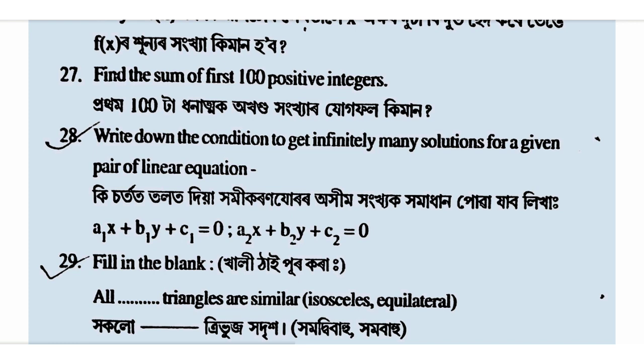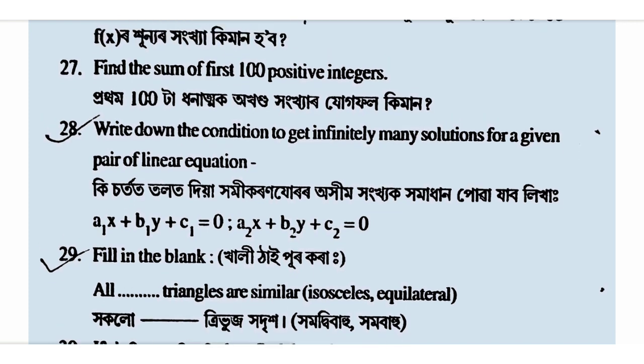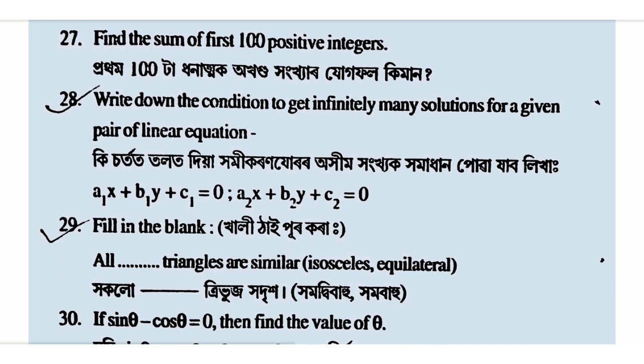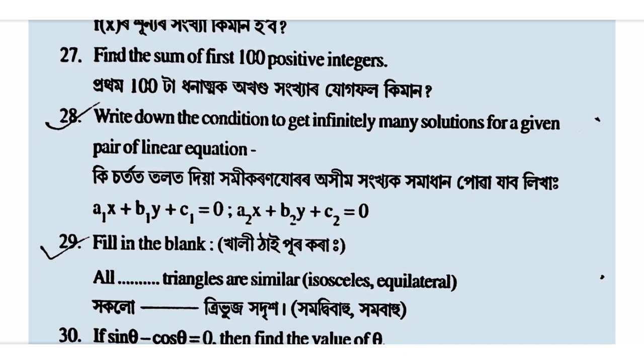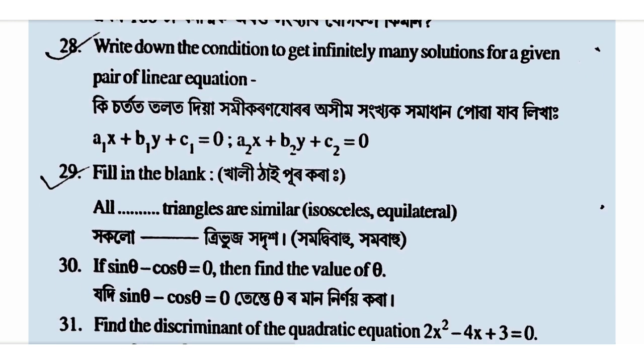Let n equal 100, a equal 1, d equal 1. Then S_n equals S_100, and the answer is 1. Next is question 8, which is our question, and we have to write it in our list. I'm going to write a1 equal, a2 equal, c1, c2.